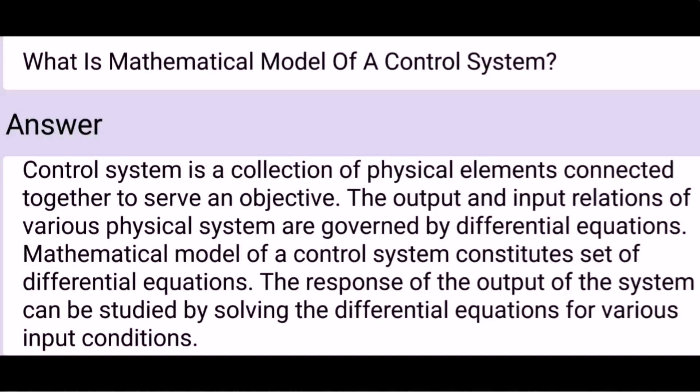What is the mathematical model of a control system? A control system is a collection of physical elements connected together to serve an objective. The output and input relations of various physical systems are governed by differential equations. The mathematical model of a control system constitutes sets of differential equations. The response of the output of the system can be studied by solving the differential equations for various input conditions.